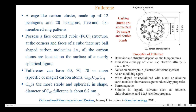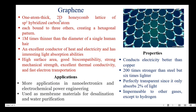C60 is the most stable and spherical in shape. The diameter of C60 fullerene is about 0.7 nanometer. The behavior and structure of fullerene depend on temperature. The ionization enthalpy of fullerene is about 7.61 electron volts. Electron affinity is between 2.6 to 2.8 electron volts. It acts as an electrophile — an electron deficient species. It also acts as an oxidizing agent. When doped or crystallized with alkaline earth metals, it showcases superconductivity properties. Mostly, fullerenes are ferromagnetic in nature and soluble in organic solvents such as toluene, chlorobenzene, and 1,2,3-dichloropropane.